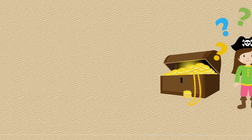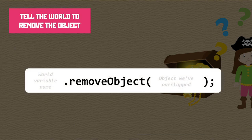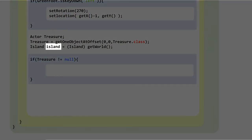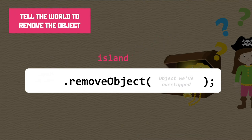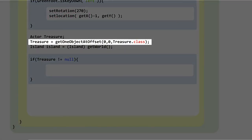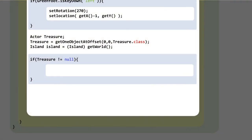In code, to tell the world to remove the object we use the removeObject method, which needs to work on the world we're in. That's the variable name we've already set — island with a lowercase i — so that goes at the start. The argument to this method is the object we're overlapping — the instance of the treasure we want to remove. That's already set up as our treasure variable. This line of code simply goes in the curly braces of the if statement.